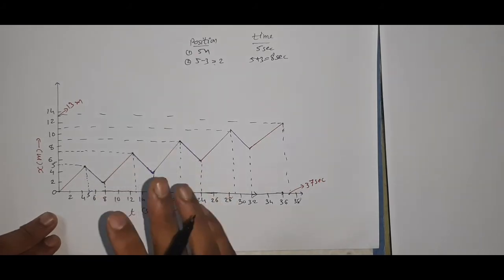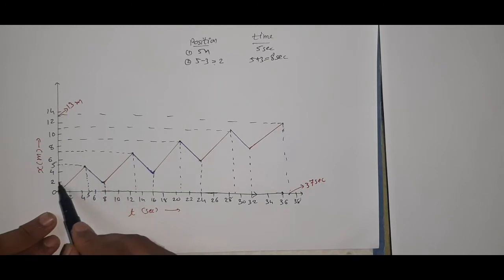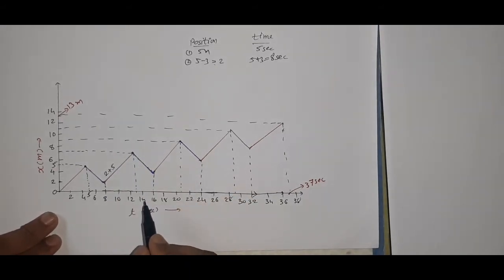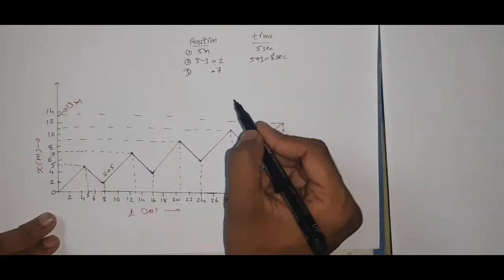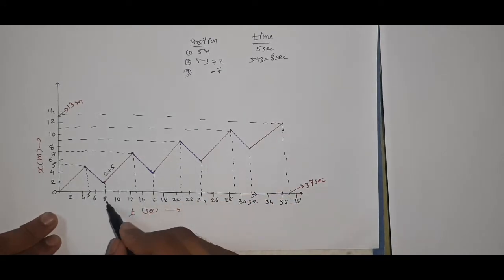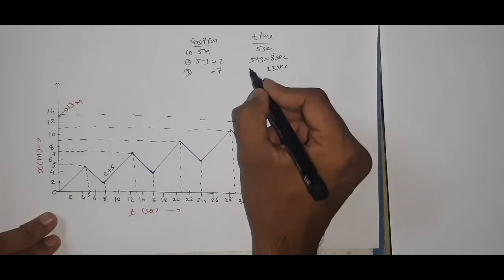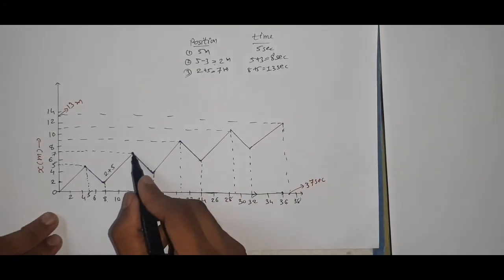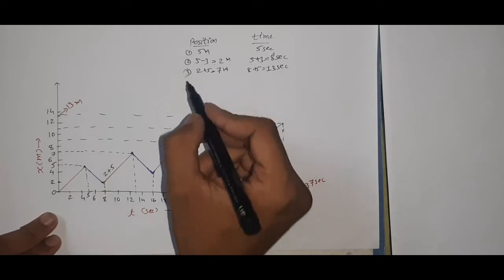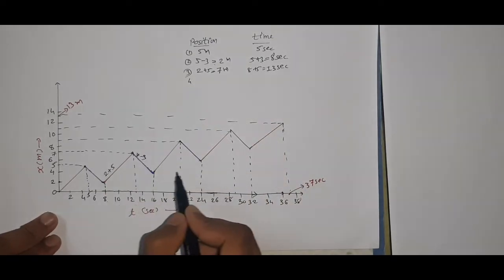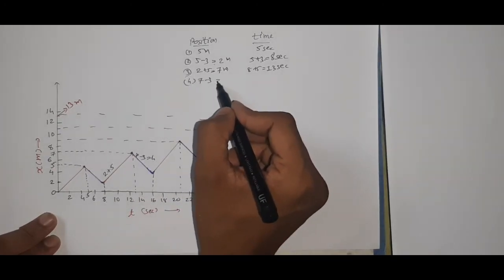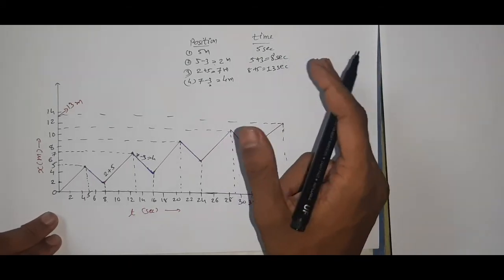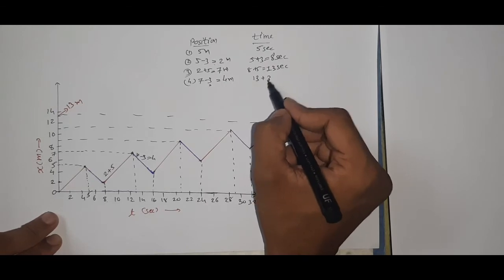After 5 steps forward, position is 5 meters at 5 seconds. Then 3 steps back: 5 minus 3 is 2 meters. Time is 5 plus 3, which is 8 seconds. Next, 5 steps forward: 2 plus 5 is 7 meters at 8 plus 5, which is 13 seconds. Then 3 steps back: 7 minus 3 is 4 meters, time is 13 plus 3, which is 16 seconds.